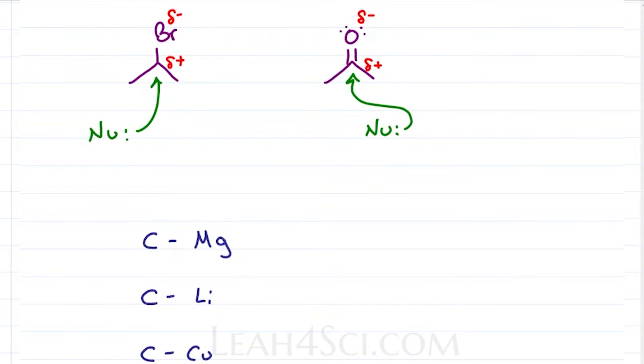Carbon has an electronegativity of 2.5, magnesium is 1.2 for a difference of 1.3, lithium is 1.0 for a difference of 1.5, and copper is 1.9 for a difference of 0.6.